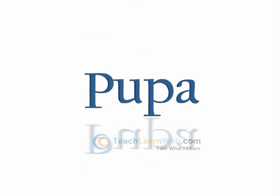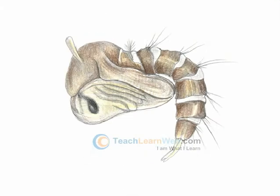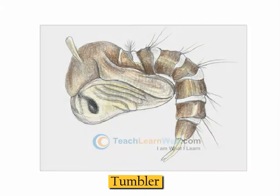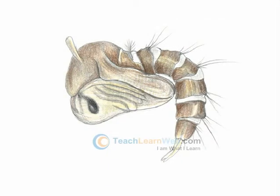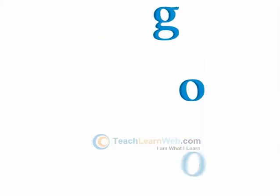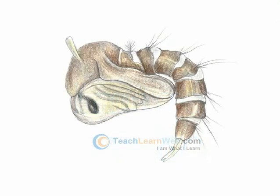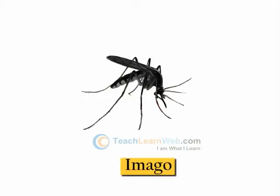Pupa. The pupa is comma-shaped and is called a tumbler. Depending on the temperature, the pupal stage lasts for 2–7 days. The pupa metamorphoses into an adult mosquito called imago.